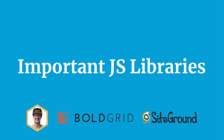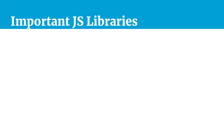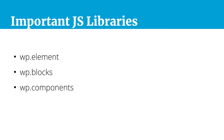Welcome. In this video, we are going to look at important JavaScript libraries that ship with Gutenberg. There are a number of different libraries which we can reference, but the ones that we will use most often are wp-element, wp-blocks, wp-components, and wp-i18n. So let's break these down a little bit more and look at each one individually.